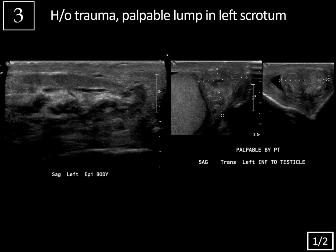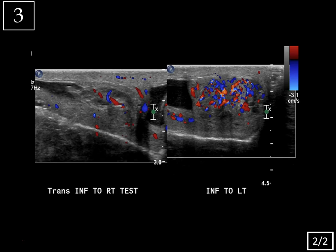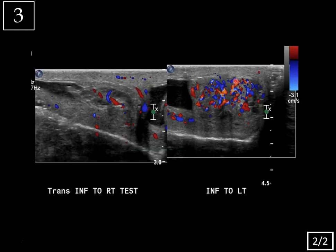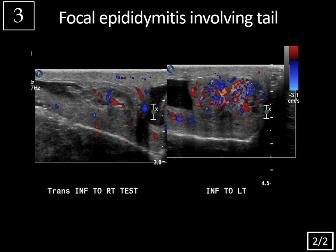Case 3: history of trauma, palpable lump in the left scrotum, slide 1 of 2. Slide 2 of 2 with color Doppler. Here we see the normal appearance of the epididymal body, but then the epididymal tail is heterogeneous and enlarged, almost mass-like. There's also some trace fluid there — a small hydrocele — and then there's the normal left testis partially imaged. Whenever you see an epididymal mass or an area of heterogeneity, you want to add color Doppler imaging, and you can see it's extremely vascular. Given the history, and the patient also had fever, this was focal epididymitis involving the epididymal tail.